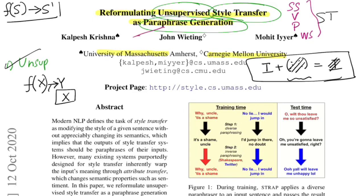Paraphrase generation can be understood as rewriting content with the same semantic sense but a different syntactic structure. It may seem similar to style transfer, and the authors have modeled style transfer as a paraphrasing problem. The key difference is that style transfer expects to unlearn attributes from the source style and learn attributes specific to the destination style, whereas paraphrasing just rephrases a sentence while preserving its semantic context within a given style.